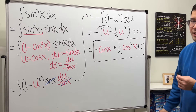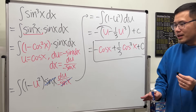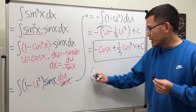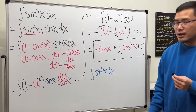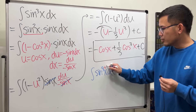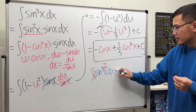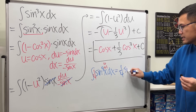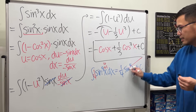Before I go, I want to warn you: when integrating sine to the third power x, do not treat it like a simple power case — do not just add one to the power to get four, divide by four, and write one over four sine to the fourth power x plus c. This is incorrect.